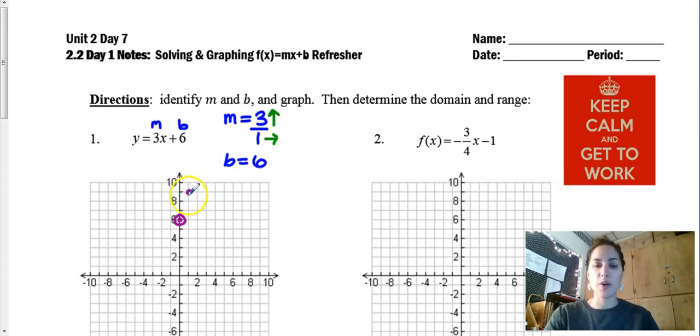I would like to get one more ordered pair but I can't go up 3. So if I go back to the y-intercept, the opposite of up and right is down and left. So we're going to go down 1 2 3 left 1.